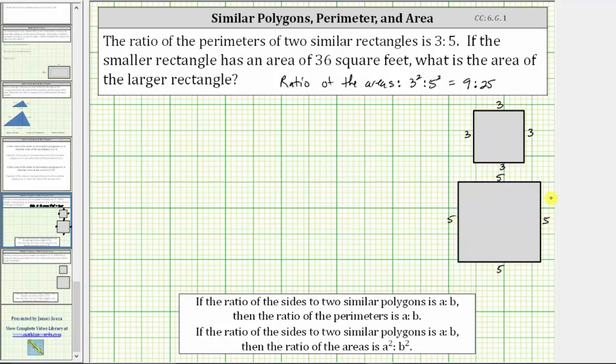We can easily see the ratio of the corresponding sides is three to five. But let's verify the ratio of the perimeters is also three to five, and then we'll find the ratio of the areas. The perimeter of the small square is equal to four times three, or 12 units. The perimeter of the large square is equal to four times five, or 20 units.